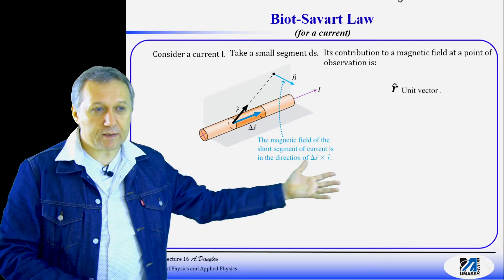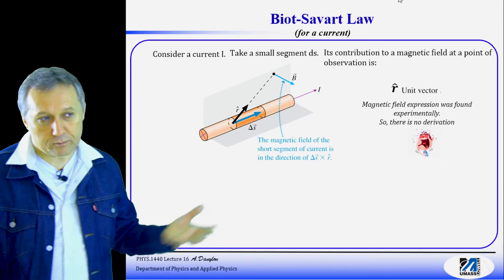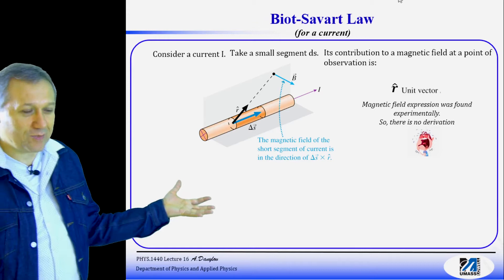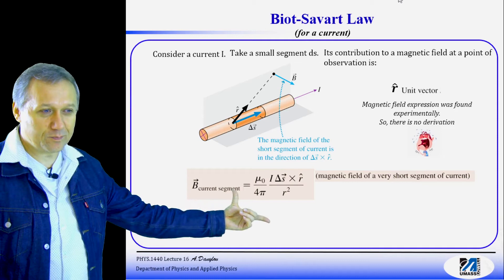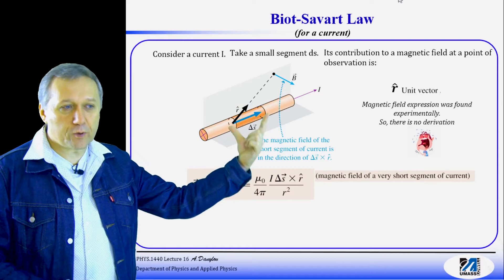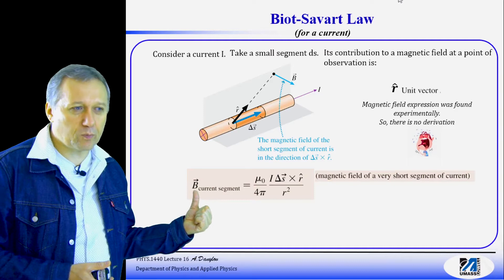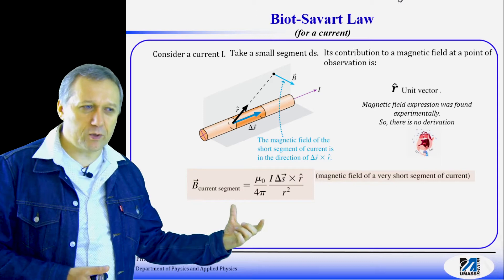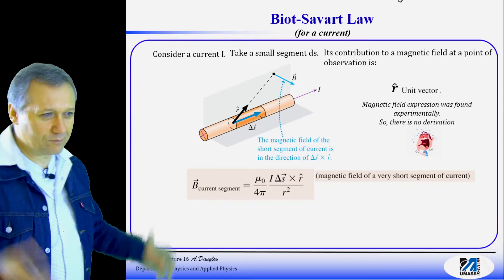This is a fundamental equation - it cannot be derived; it's written based on observation. Since it's fundamental and based on observations, we just present it: here's the law. It's the expression which allows us to find the magnetic field - specifically, the contribution to the net magnetic field at a point from an infinitesimally small section ds. I would prefer to write db rather than b, because most of the time we have to integrate this equation to find the net magnetic field. But the author wrote b, which is not a crime.